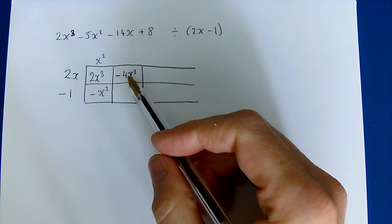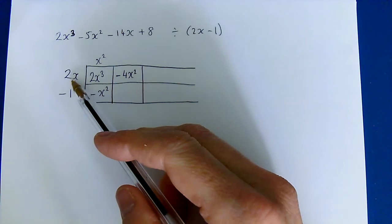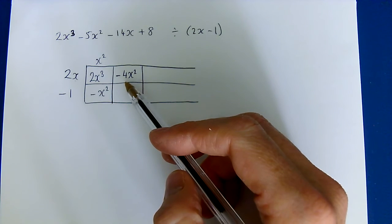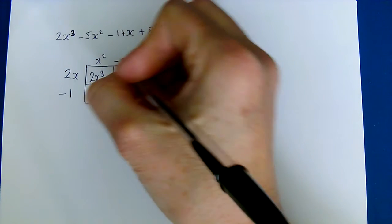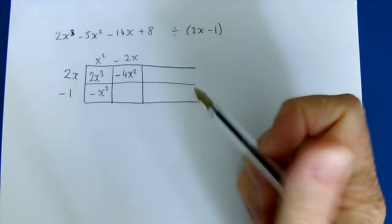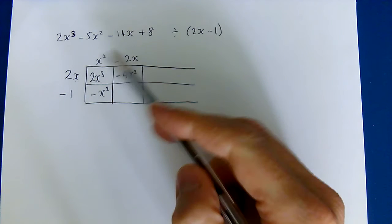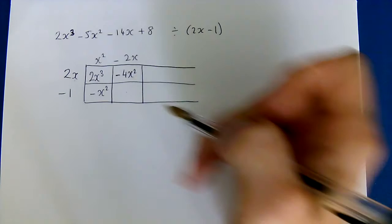So now we're thinking what do we multiply 2x by to make negative 4x squared? So we need negative 2x and now we can multiply negative 1 by negative 2x to fill this box in.